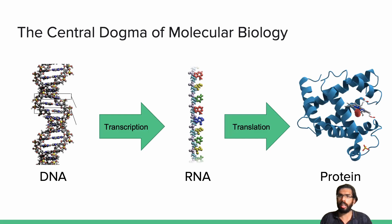In our bicycle example, we have used the copy of the instructions — or in other words, the RNA — to actually build a bicycle, which is the protein. Of course, as it is with all biology, reality is much more complicated than a simplified summary. But for the purpose of this course, we will only consider the simplified model.